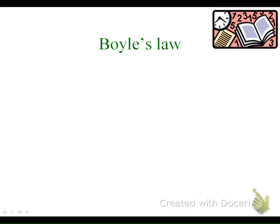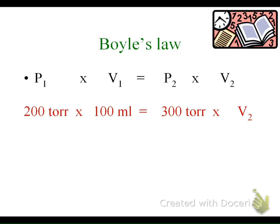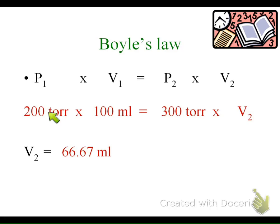Set up the math: P1V1 = P2V2 — it's just an algebra problem. Plug in the variables, making sure the pressure units are both in torr and the volume units are both in mL. Solving for V2 gives 66.67 mL. Because my pressure increased, we said my volume should decrease — and that indeed happened. The relationship held, and I've verified the problem based on my understanding of the relationship.